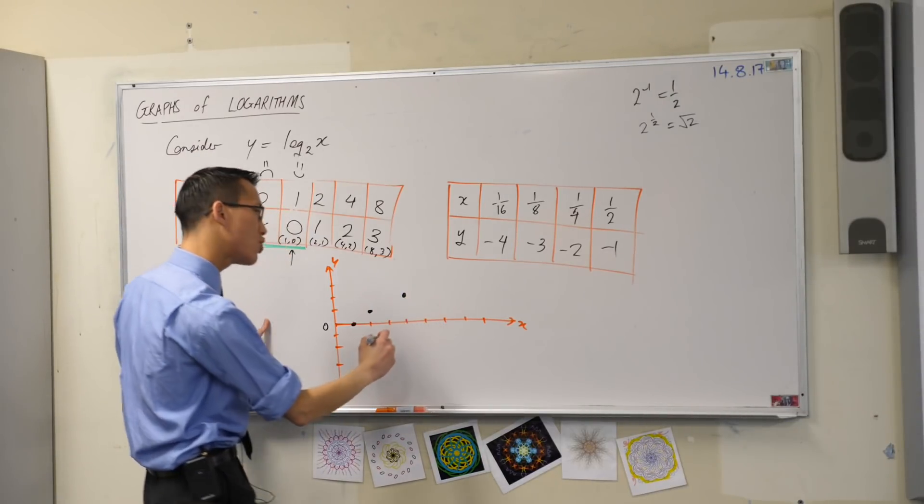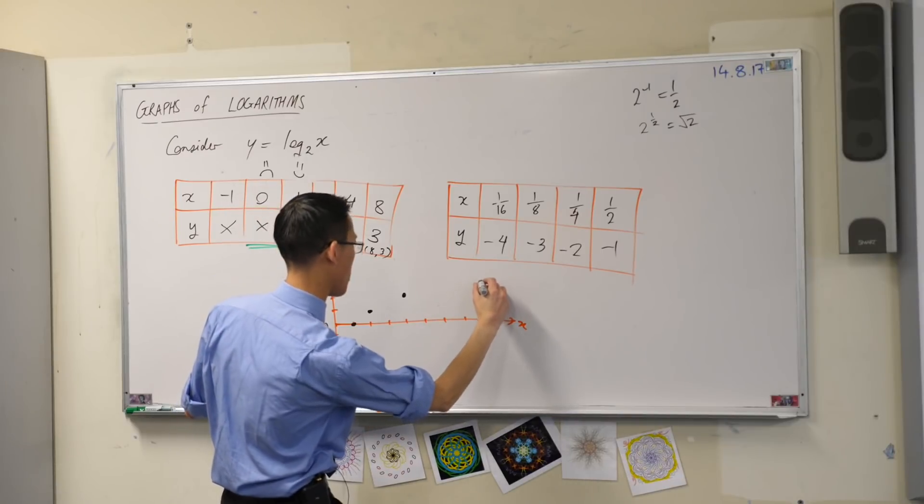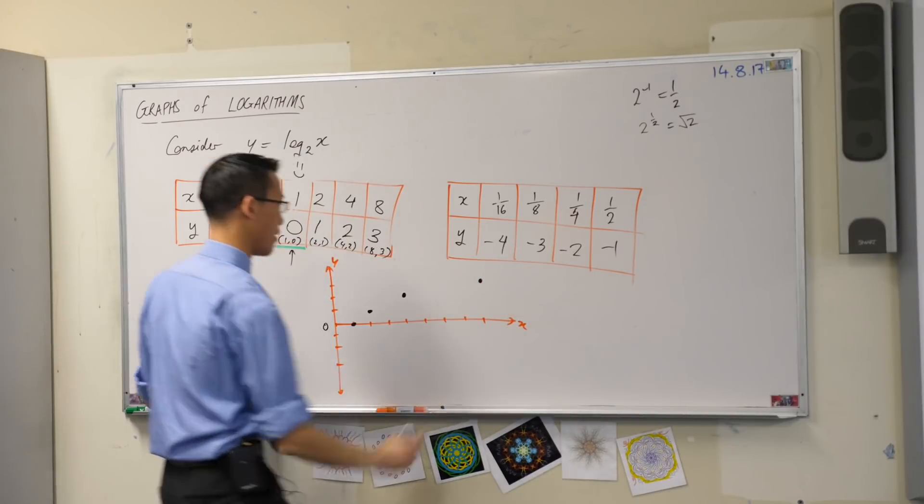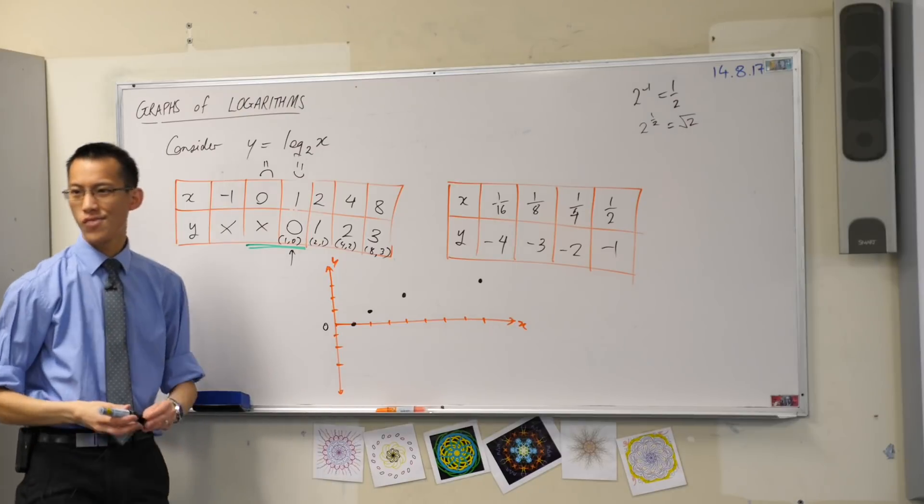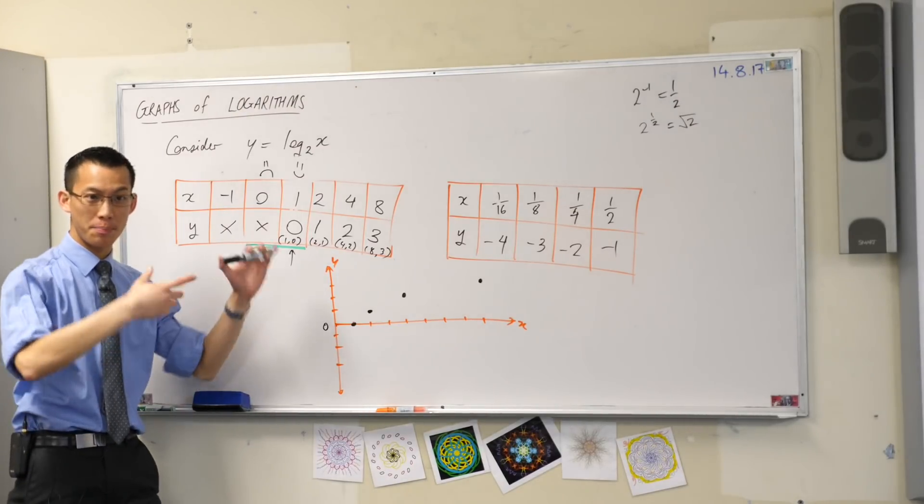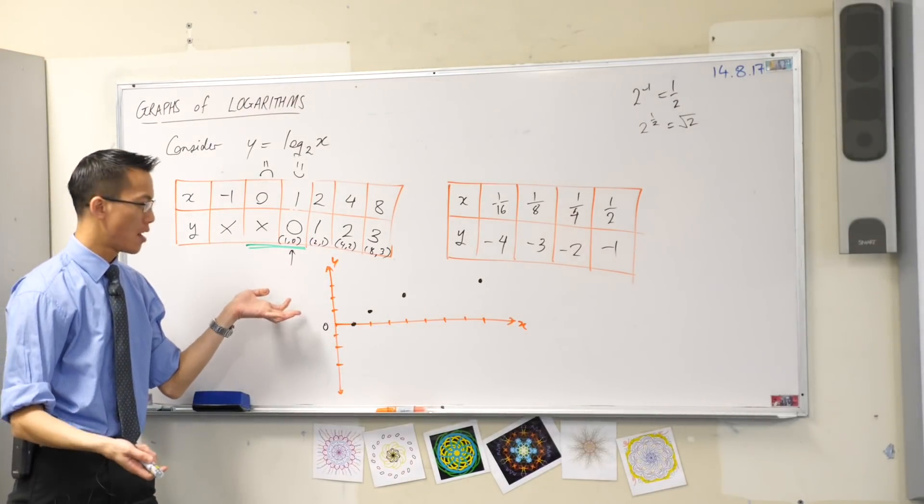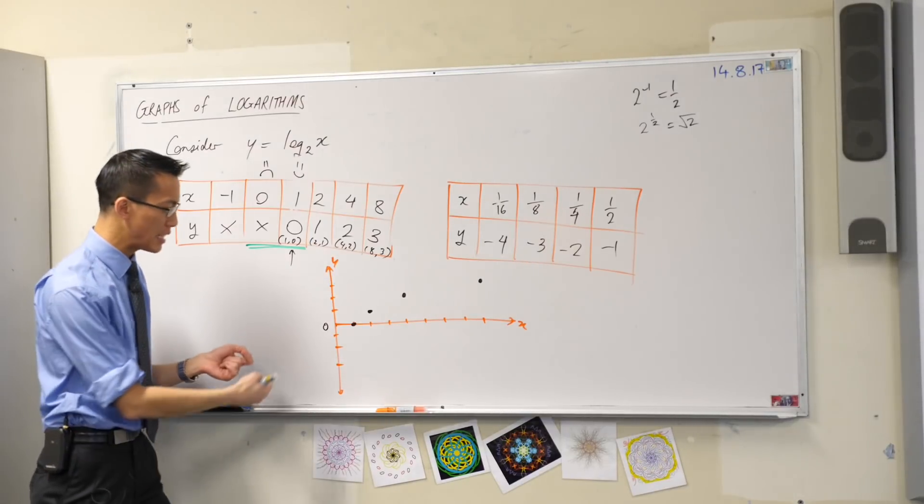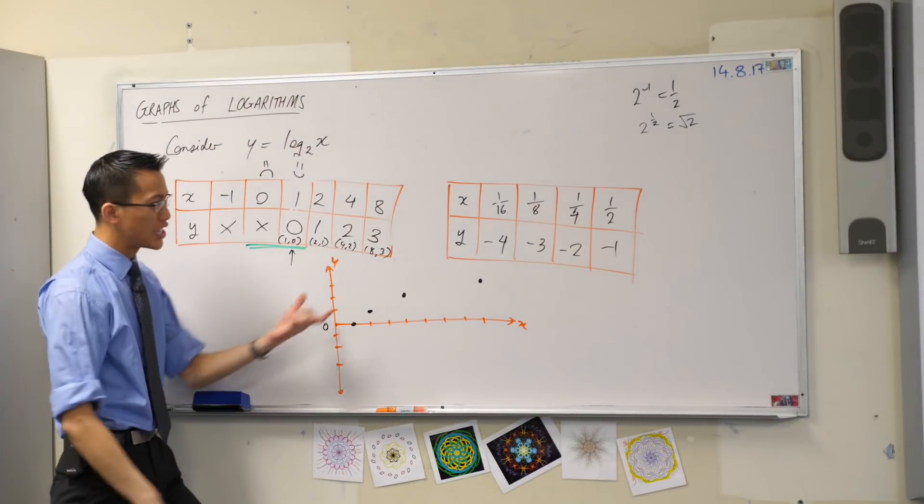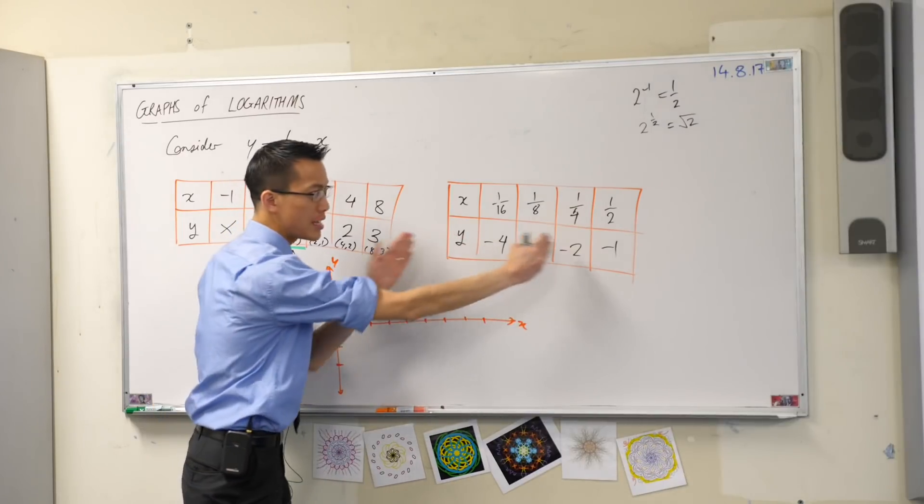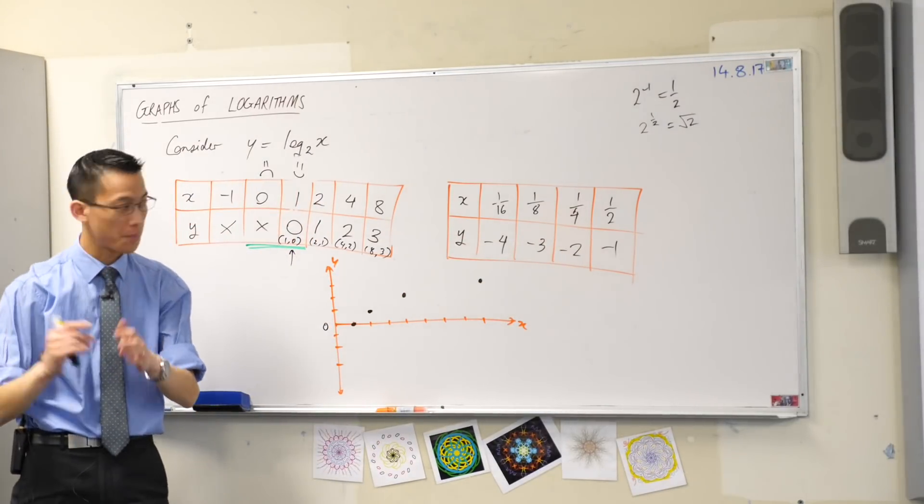Should we connect them? Not just yet. We will connect them all together at the end. So these are the values, these are the points we got out of the first table. But then do you remember what we said? We were like, yeah, we don't know what's going on in here. So that's how we kind of zoomed in. All of these values are between zero and one.